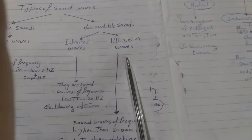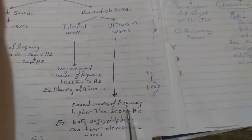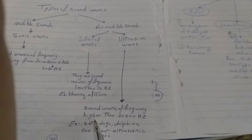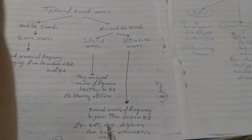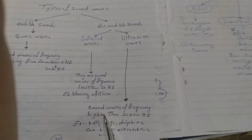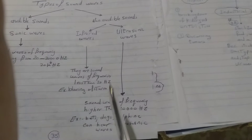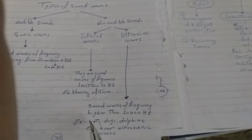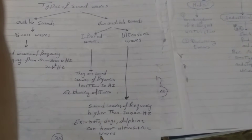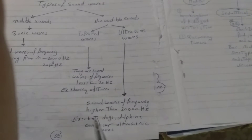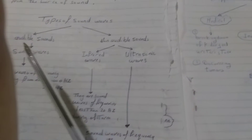Ultrasonic waves are sound waves with frequency higher than 20,000 hertz. These waves can be heard by bats, ducks, and dolphins. All of these animals can hear ultrasonic waves, but we cannot hear them.